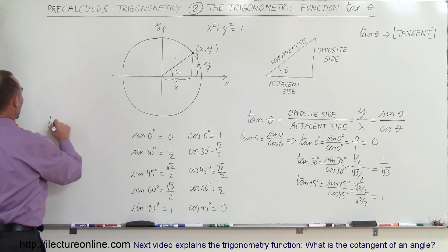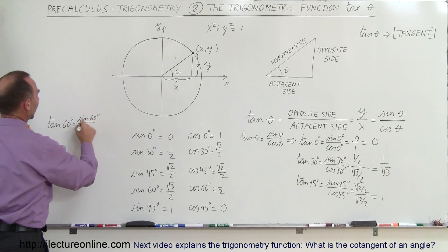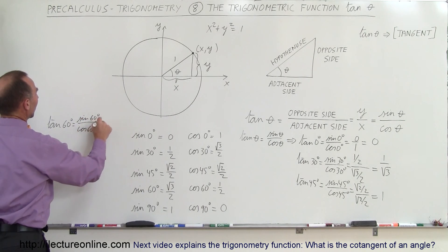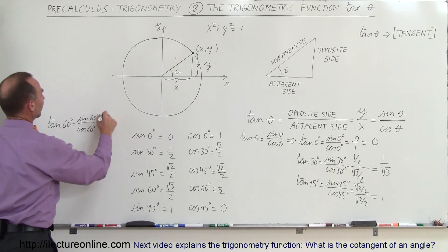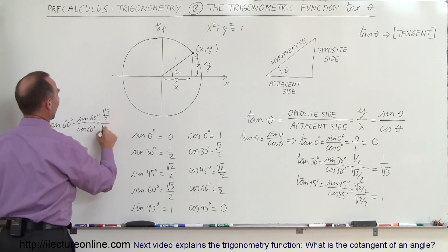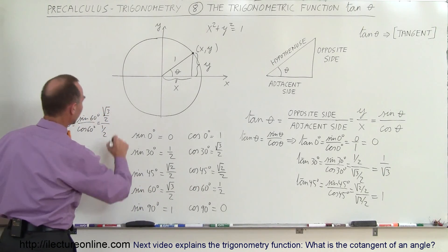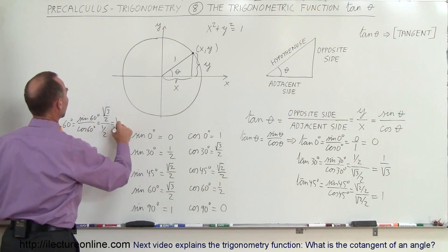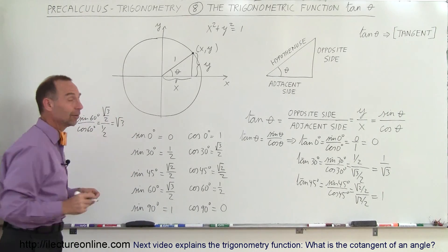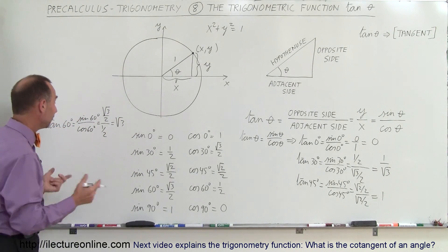The tangent of 60 degrees is equal to the sine of 60 degrees divided by the cosine of 60 degrees. The sine of 60 is the square root of 3 over 2 and the cosine is 1/2. The 2's cancel out, giving the square root of 3 — which is already bigger than 1.